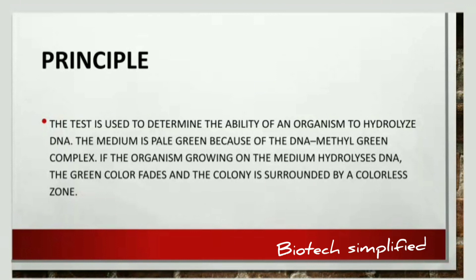If the organism present in the medium is capable of hydrolyzing the DNA, then the area around the colony changes from green color to a colorless zone. That is, around the colony the green medium becomes colorless. This is the basic principle of the DNase test — if the organism hydrolyzes DNA, the green color fades and becomes colorless.